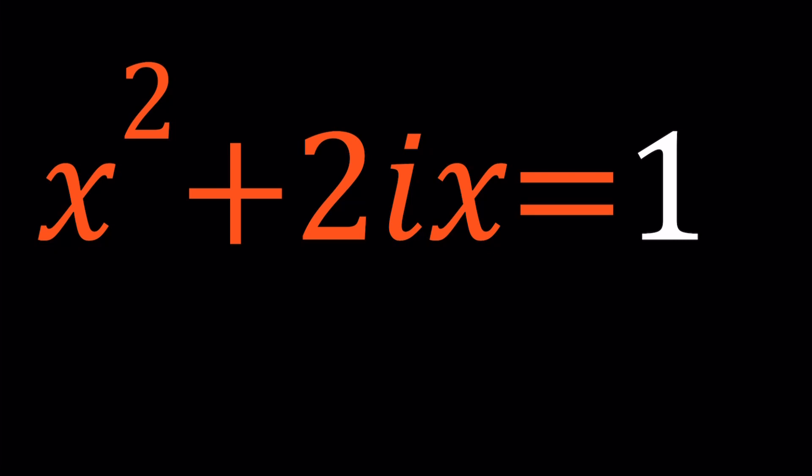And I want to start with the first method. So you probably noticed in this case we are dealing with a complex number. Obviously x cannot be real because if x is real then x squared will be real and 1 is real, but 2ix is probably not real. Unless x is something like i, but then i is not real, so x must be not real. Okay, x is complex.